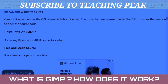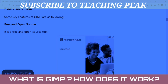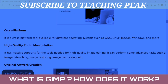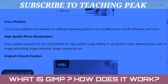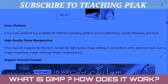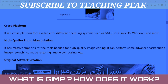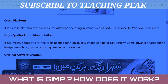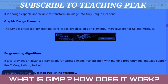Some key features of GIMP: it is free and open source. It is cross-platform, available for different operating systems such as GNU Linux, Mac OS, Windows, and more. It has massive support for the tools needed for high quality image editing and can perform advanced tasks such as image retouching, image restoration, image compression, and graphic design elements.